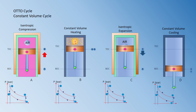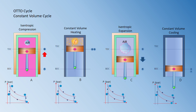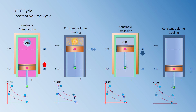After heating, the system expands and pushes the piston downward, moving from top dead center back to bottom dead center. This is represented by the process 3 to 4, which is also an isentropic process — no heat flow. On the PV diagram the system moves from state point 3 to state point 4 along the isentropic curve.